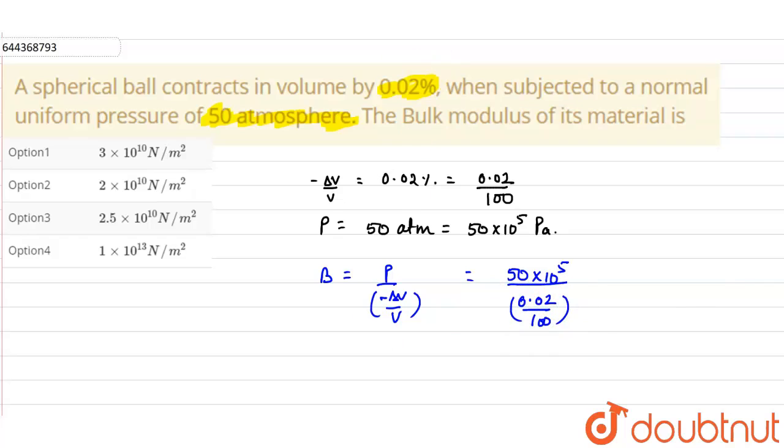So, on solving this, we will get our bulk modulus. The bulk modulus will come out as 2.5 into 10 raised to the power of 10 Newton per meter square. So, option 3 is correct.